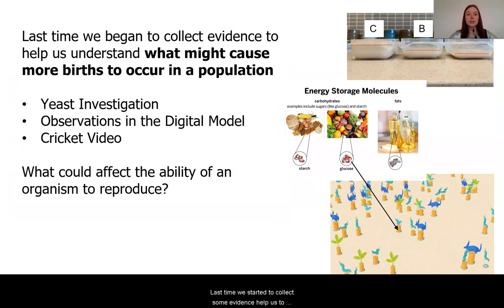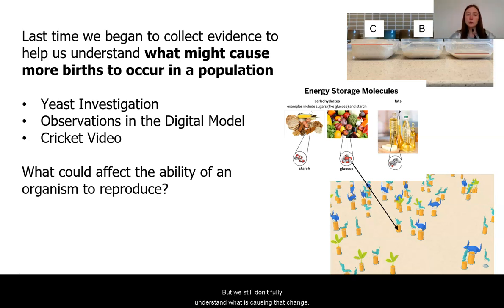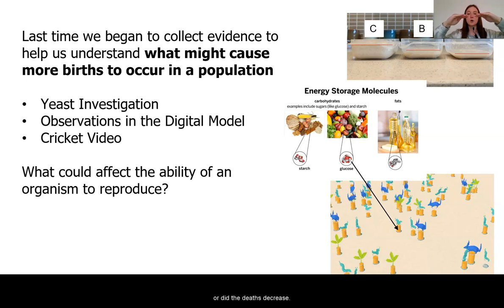Last time, we started to collect some evidence to help us understand what might be causing more births to occur in a population. We know that in the moon jelly population, there are more births than deaths happening, but we still don't fully understand what is causing that change. Did the births increase, or did the deaths decrease? Right now, we are focusing on births and how they change in a population.